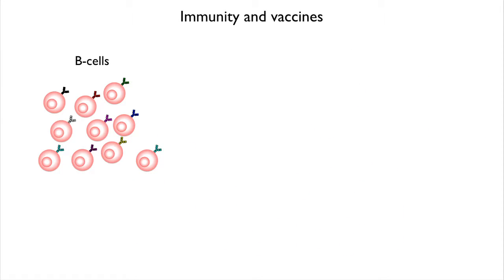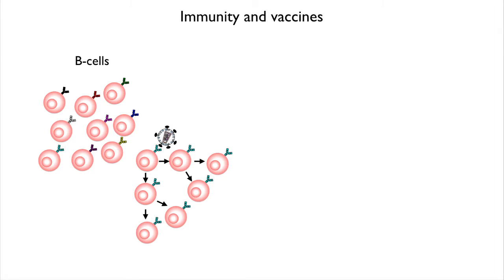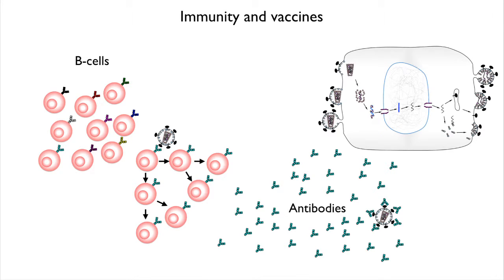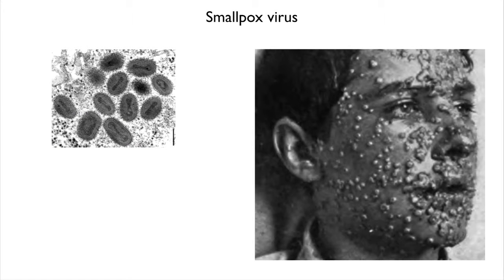We can also trick our immune systems into providing a defense against viruses — that's what we do with vaccines. When you get a vaccine shot, you're usually receiving either a weakened virus, a dead virus, or sometimes just a little piece of a virus. Your B cells can't tell the difference between the nasty virus and the vaccine, so they grow and divide, grow and divide, and make antibodies — and you do that without ever having seen the real virus. But then when the real virus comes along, you already have antibodies on board that mop up the virus and kill any virus-infected cells, and you would never know you were even exposed.